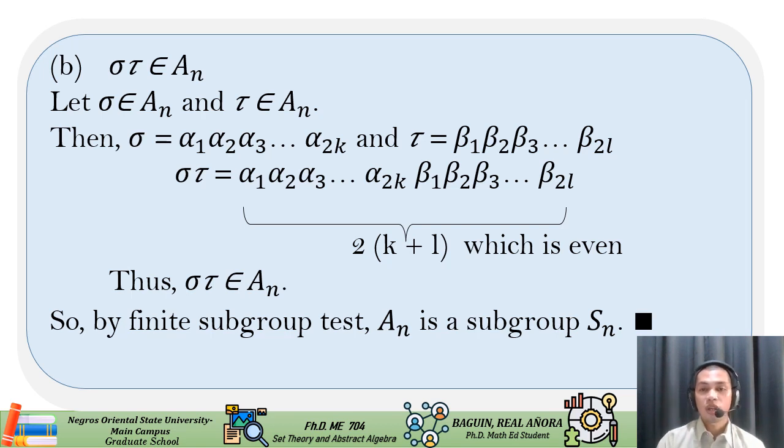Thus, sigma tau is in A sub n. So, by finite subgroup test, we prove that A sub n is a subgroup of S sub n.